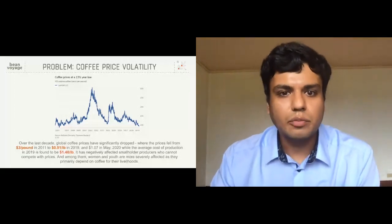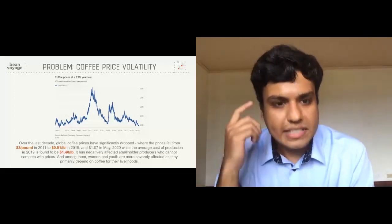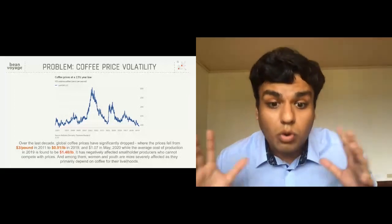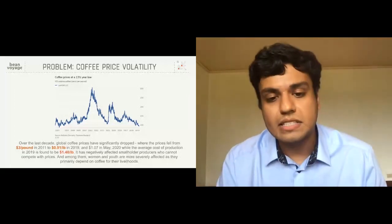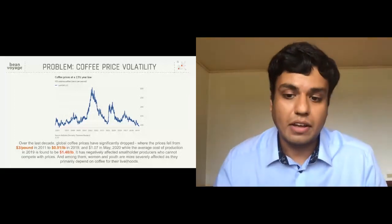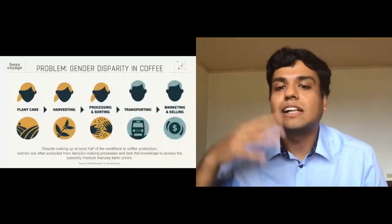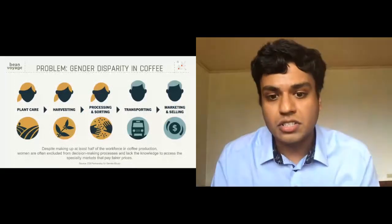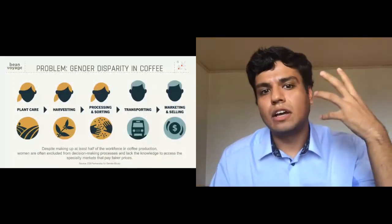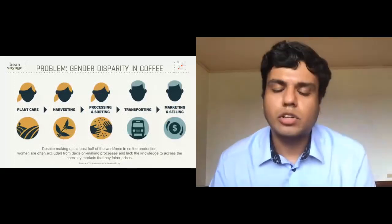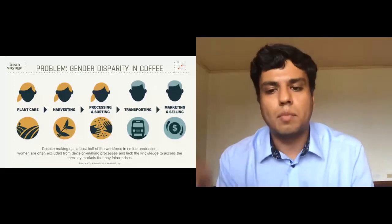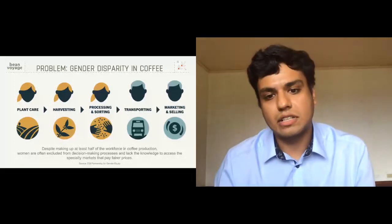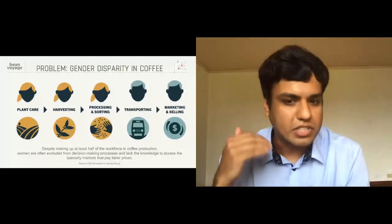So we did some more research, and we found that there was a second layer to this problem. The second layer was one of gender. Despite making almost half of the population, more than half the population in the coffee production space, they were actually excluded from a lot of the decision-making processes, and they lacked the knowledge to sell directly to these fancy specialty markets. So when we pay for a cup of coffee $4, we're probably paying to a very kind of fair trade local shop. But that local shop is not necessarily always buying from a smallholder woman coffee farmer, because women coffee producers have less access to those kinds of markets. And so there was this kind of double layer of the problem. It wasn't just one problem.